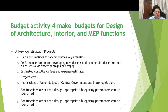Activity number four is making the budget for the design of architecture, interior, and MVP functions. This will be different for each function and each industry. In the context of the construction industry and design function, the budgeting parameters for new construction projects include: plan and timelines for accomplishing key activities; performance targets for developing new designs and commercial design rollout plans vis-à-vis different stages of design; estimated consultancy fees and expense estimates; and project cost implications of the union budget, central government, and state legislation.